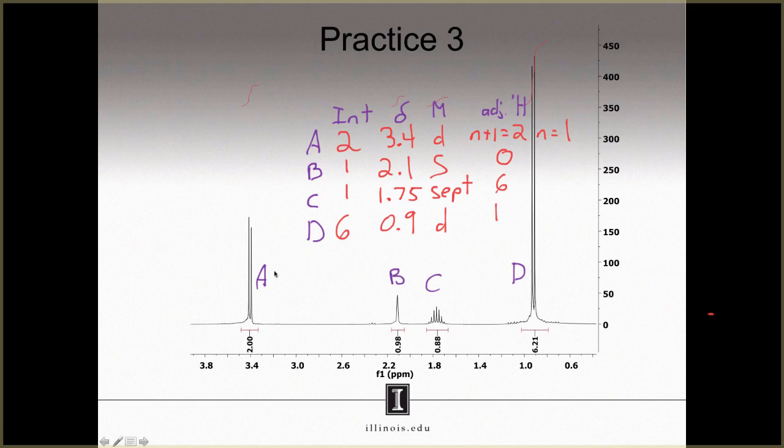There we go. We now know how many equivalent sets of hydrogens there are: one, two, three, four. We now know how many protons belong in each set based on the integration. We have a rough idea of what kinds of protons these are based on the chemical shift. Signal A is further downfield, therefore it must be near a strong electron withdrawing group. In contrast, signal D is very far upfield, therefore it must not be near any electron withdrawing group. We also know something about the neighborhood of all of these signals. We know that the protons in signal A have only one neighbor, but the protons in signal C have 6 neighbors.